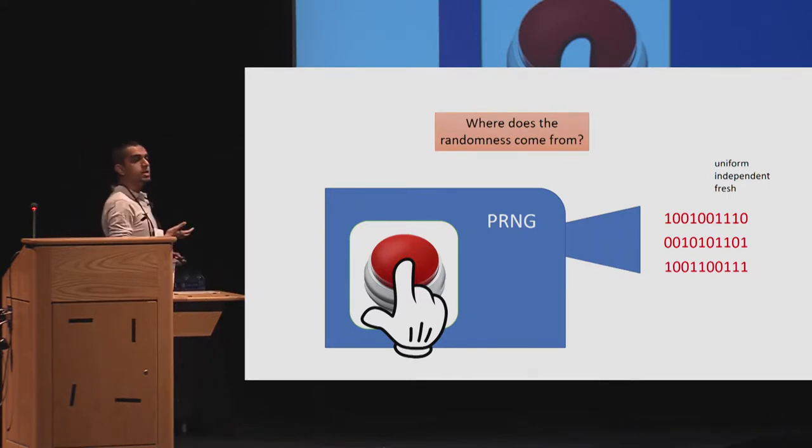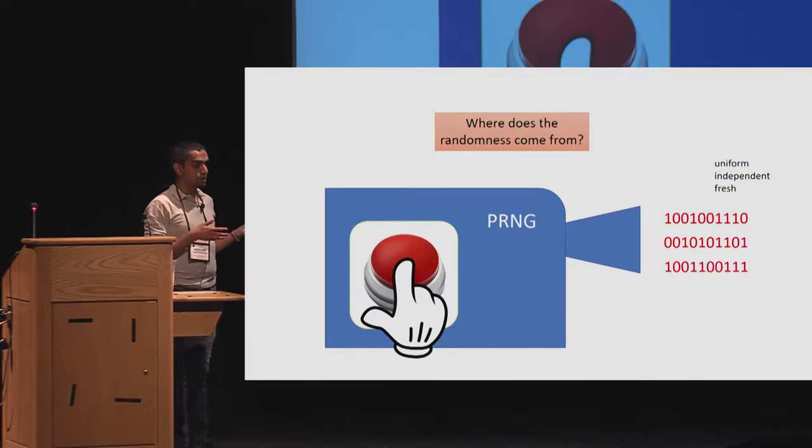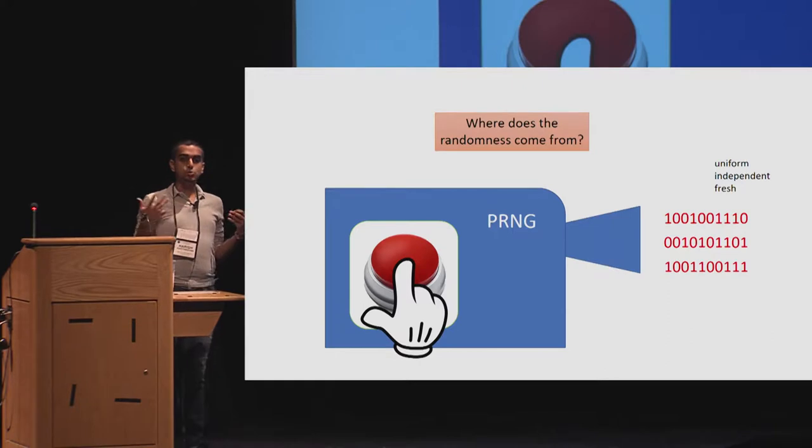What is common among these outputs is that we want the output to be uniform, independent, and fresh. But where does this randomness come from?